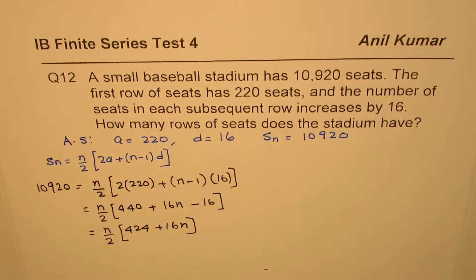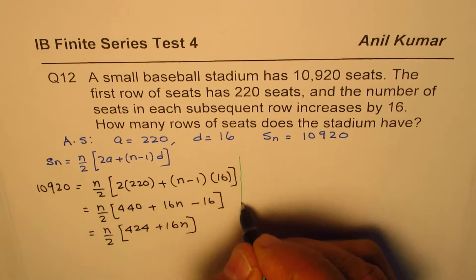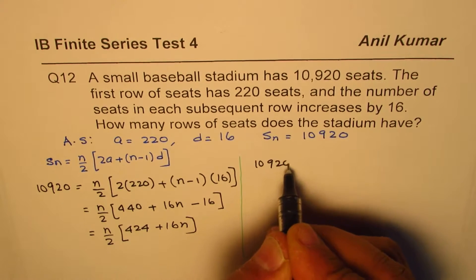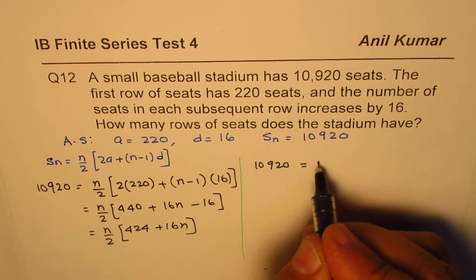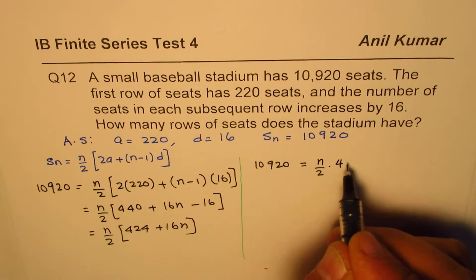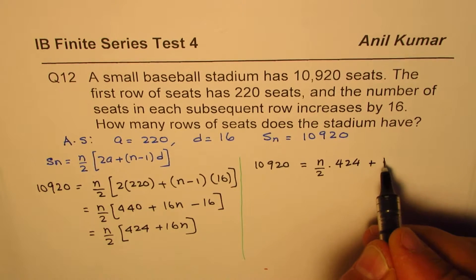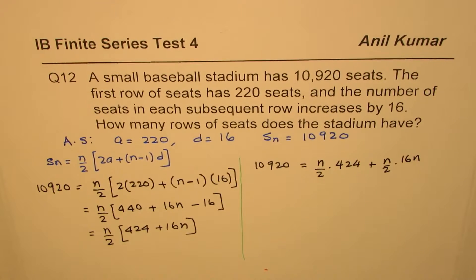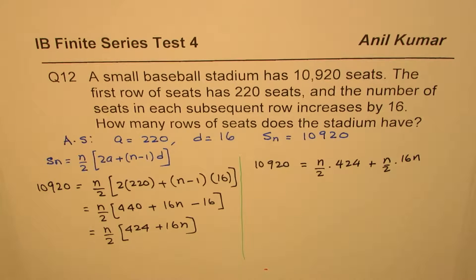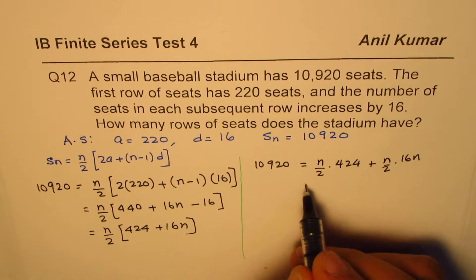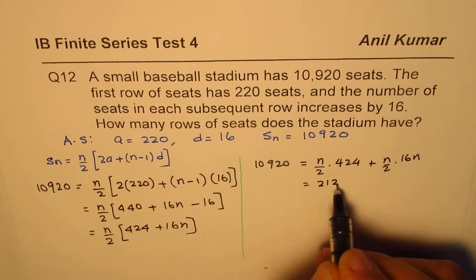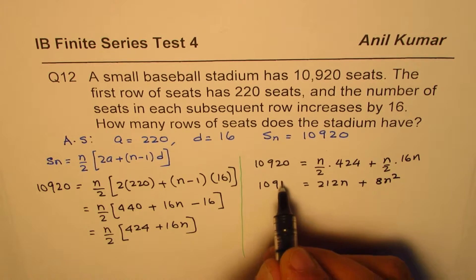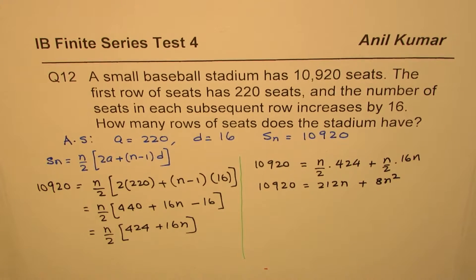Now let us open this bracket. So we have 10,920 total number of seats equals to, we are opening the bracket. That means n divided by 2 times 424 plus n by 2 times 16n. So half of this is 212. So we have 212n plus 8n² equals to 10,920.